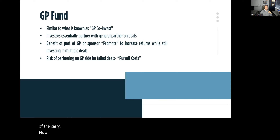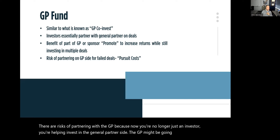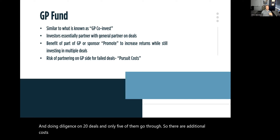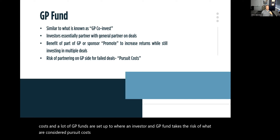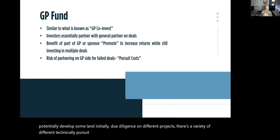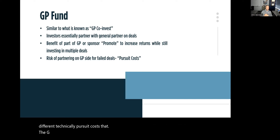There are risks of partnering on the GP side because you're no longer just an investor. The GP might be pursuing and doing diligence on 20 deals and only five of them go through. Many GP funds are set up so that an investor takes on the risk of what are called pursuit costs — the costs the general partner needs to put out for initial land development, due diligence on different projects, and other expenses that the GP fund may pass on to its investors.